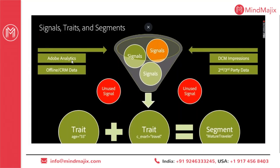When collecting Adobe Analytics data or offline CRM data, the data comes in the form of signals — which are key-value pairs. For example, if I go to the homepage of a particular website, a signal like 'page type equals homepage' flows into Adobe Analytics. Similarly, impressions from DoubleClick or any third-party data subscribed to are captured as key-value pairs. For third-party data, a signal might be 'age 25 to 30'. That signal is used to create a trait, and traits are then used to build a segment. A segment is composed of traits, and inside a trait there are signals which capture user behavior or user data from different data sources.